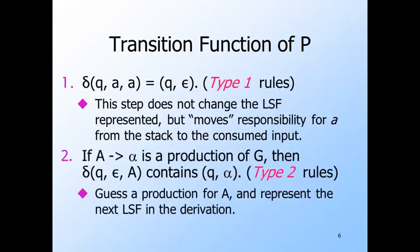The type two rules handle a variable, say A, on the top of the stack. We need to expand that variable by the body of one of its productions and thus move to the next left sentential form. Of course, we're only guessing. We have to allow any of A's productions to be used. If A goes to alpha is one of these productions, then a choice for P using epsilon input and with A on top of the stack is to replace A by alpha.